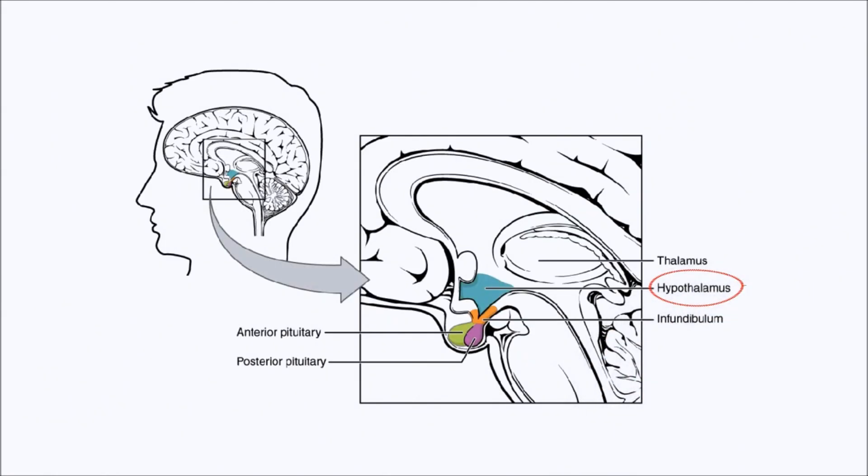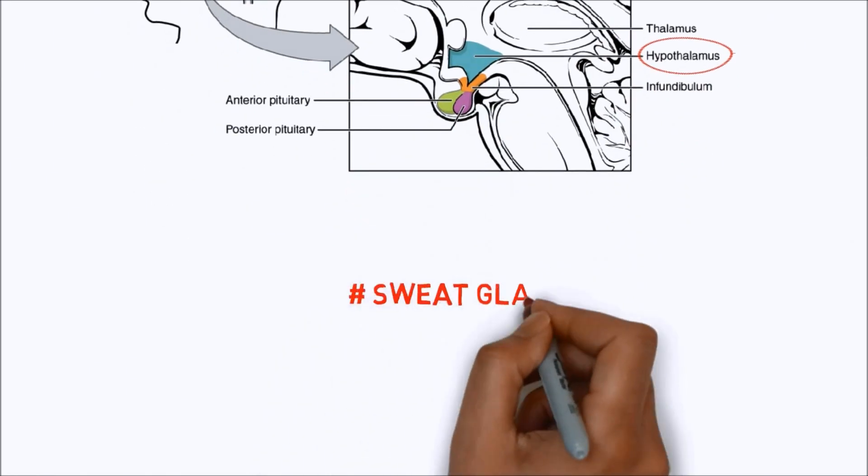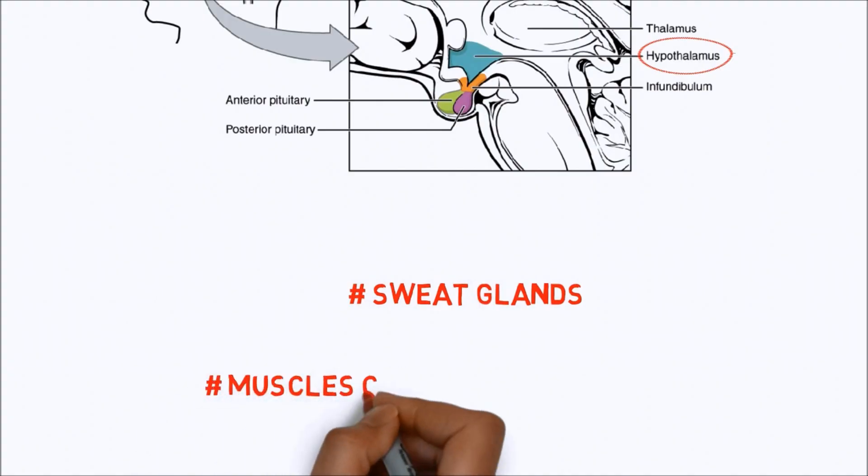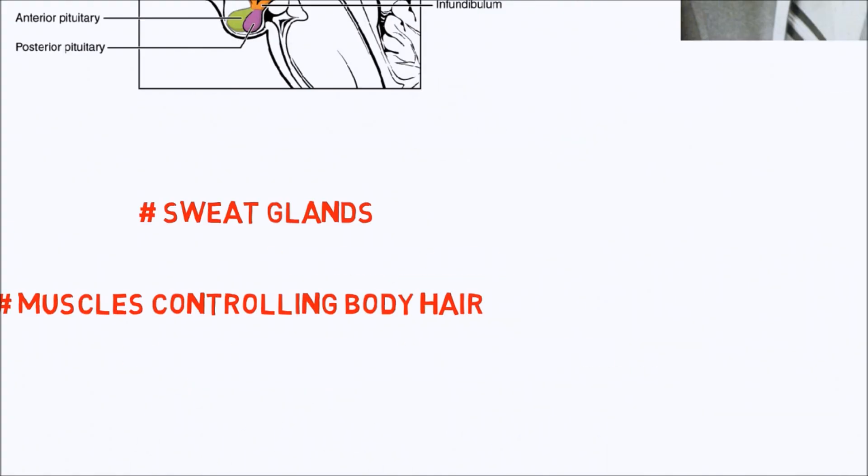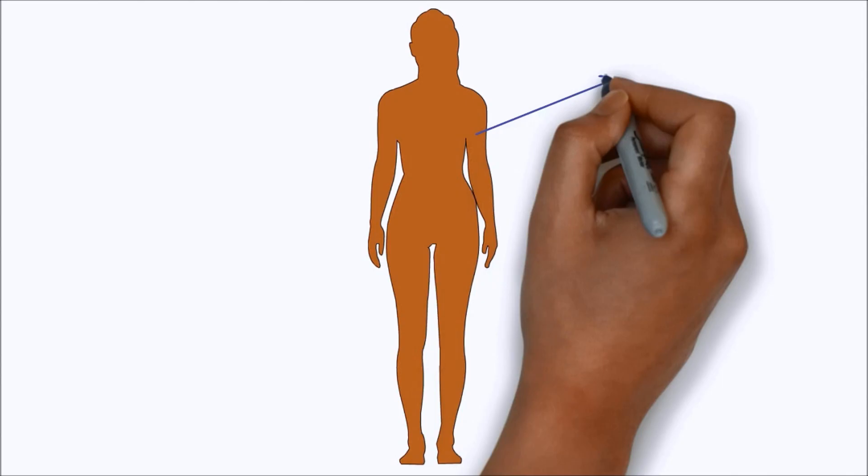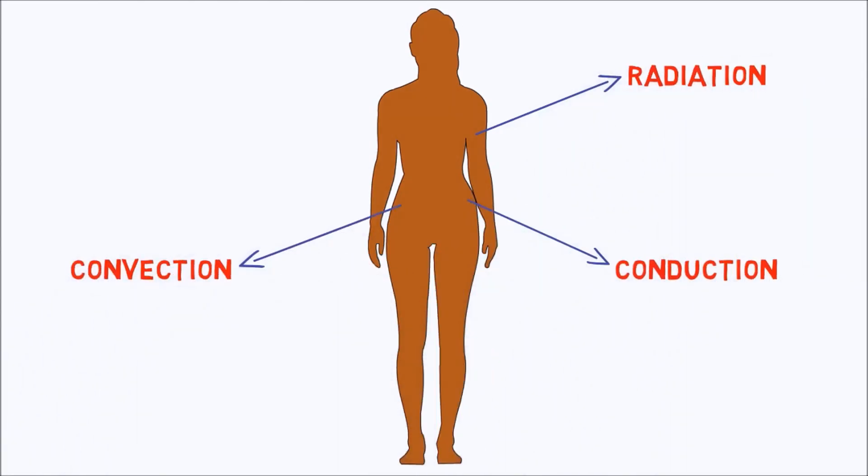It does this by triggering changes to effectors such as sweat glands and muscles controlling body hair. The external heat transfer mechanisms are radiation, conduction, convection, and evaporation of perspiration. However, the process is far more than the passive operation of these heat transfer mechanisms.